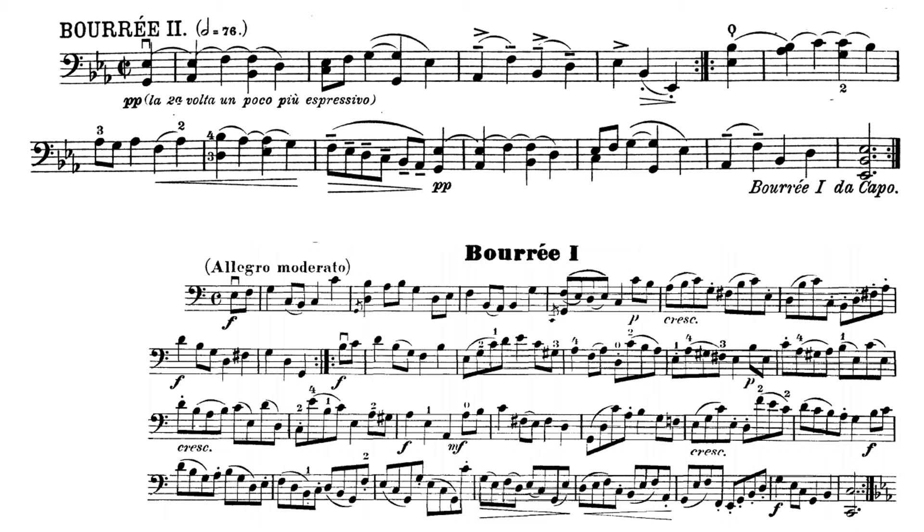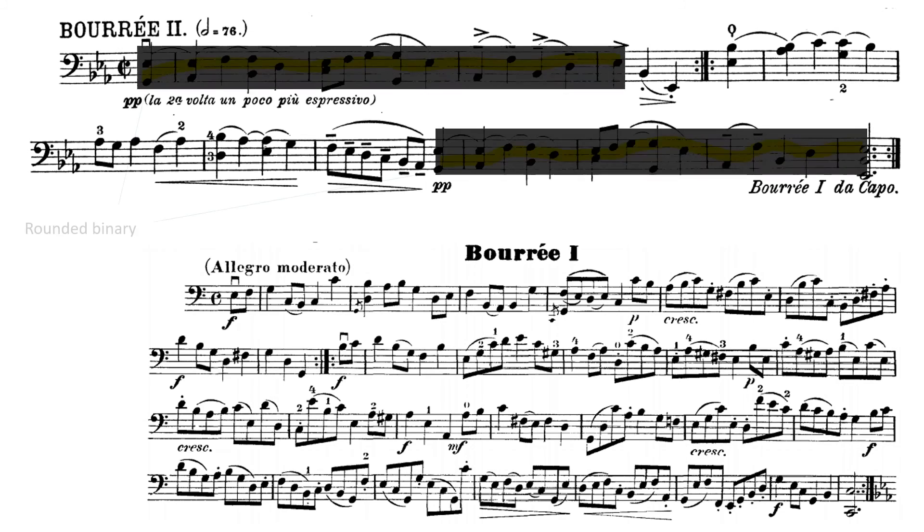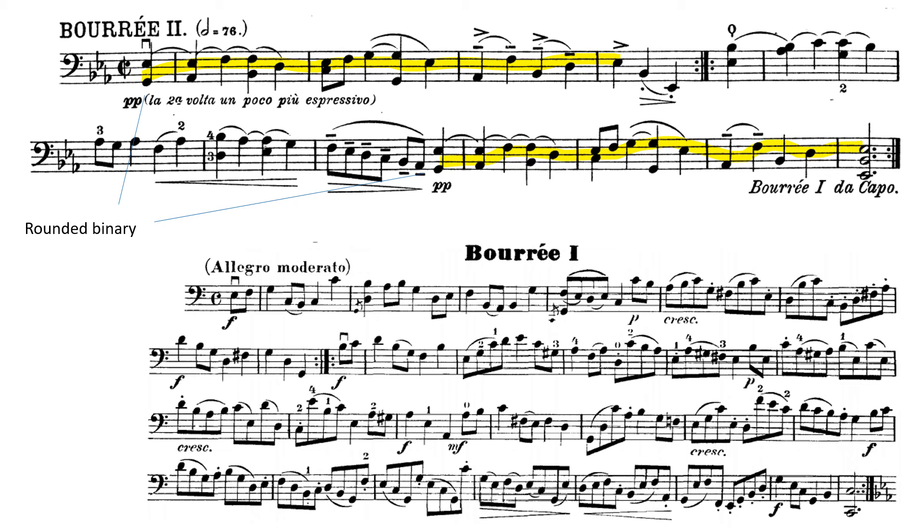Okay, the A part is repeated. Here's the B part. And then, as the second half of the B part, all of the A returns. Right? So this is going to be called rounded binary. Because we have a return of the A part. The first, the beginning of the A part, and in fact all of the A part returning within the B part.